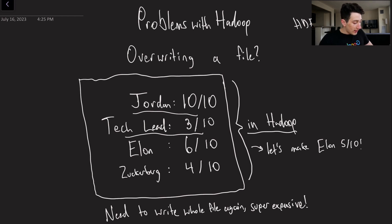But the issue is let's go ahead and say that Elon, after limiting the amount of Twitter posts that we can see, has now become a five out of ten. Well in Hadoop at least there's no way that we can just go ahead and make an ad hoc edit to just one file at a time and edit one piece of data on disk.